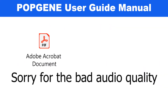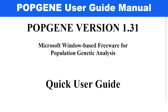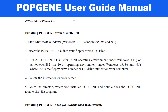Now let's jump into the Popgene version 1.31 user manual guide. In that user manual you will find all details about the installation of this software, what kind of data you need to input, and how to prepare data sheets. Please download the user manual guide from the website, read it carefully, and if you have any questions ask me in the comments below.